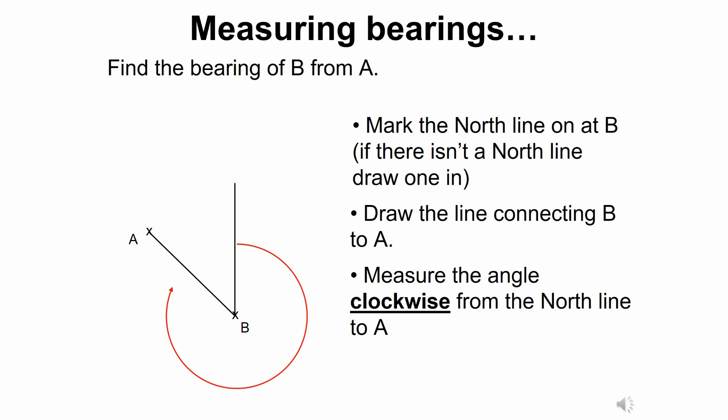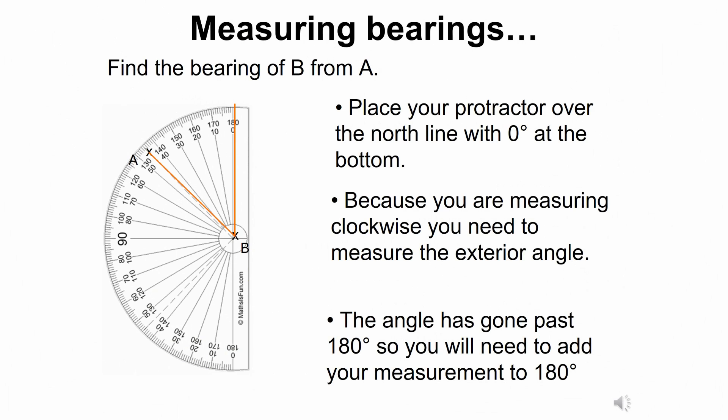So you follow the same procedure again. You draw a north line from the starting point, this case being B, and then you connect the B to the A, and you want to measure clockwise going round the angle from the north line all the way to the line that connects the two points.